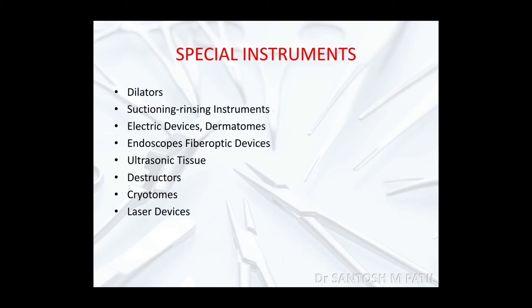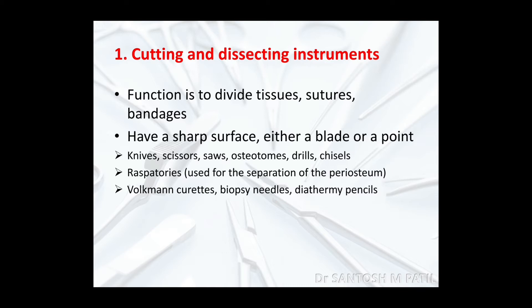Starting with cutting and dissecting instruments — the main function of these instruments is to divide tissues, suture materials, and bandages used for dressings. They have a sharp surface with either a blade or sharp points. Examples include knives, scissors, saws, osteotomes, drills, chisels, raspatories used for separation of the periosteum, Volkmann curettes, and bath needles among other instruments.